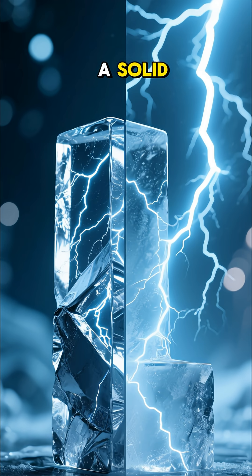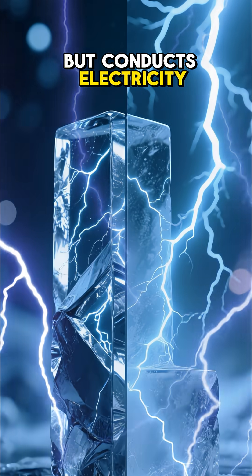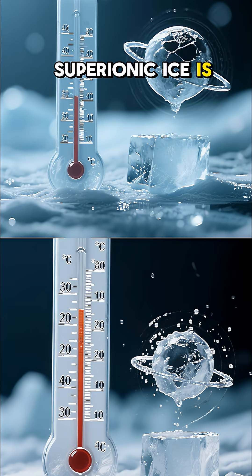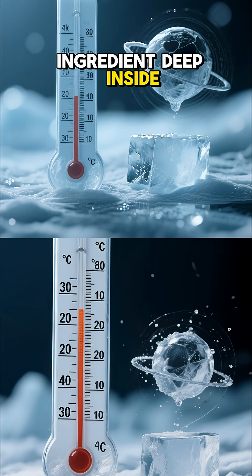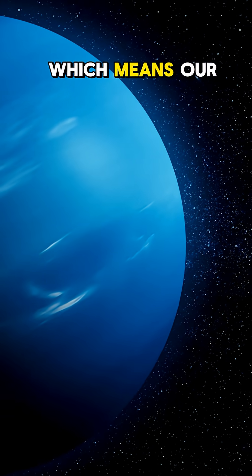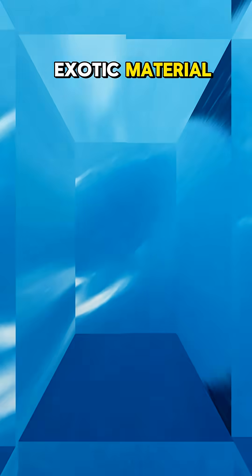It behaves like a solid, but conducts electricity like metal. Superionic ice is believed to be a major ingredient deep inside Neptune and Uranus, which means our own solar system hides the same exotic material.